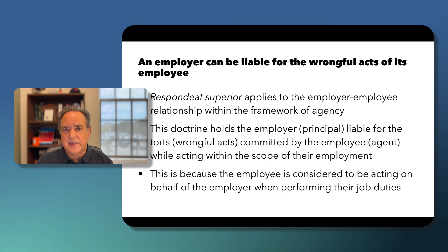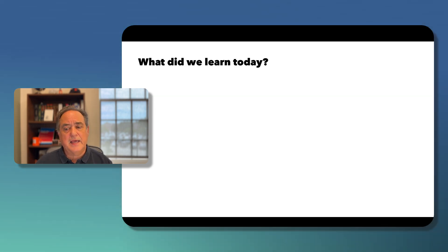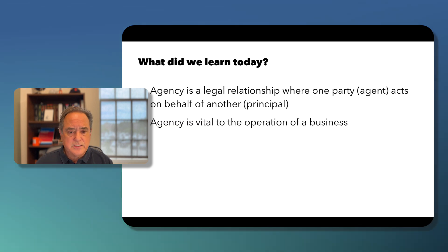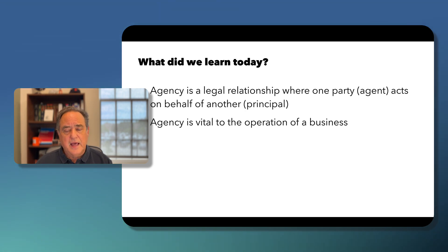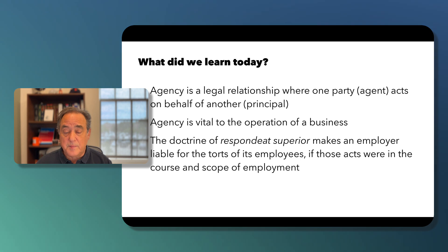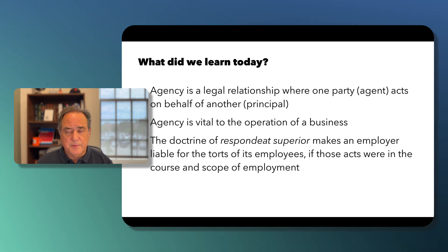In conclusion: agency is a legal relationship where one party, the agent, acts on behalf of another, the principal. Agency is vital to the operation of a business — a business could not operate without agents. And the doctrine of respondeat superior makes an employer liable for the torts of its employees if those acts were committed in the course and scope of employment. I hope that gives you some theoretical background to employment law and why employment law works the way it does.